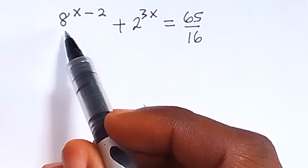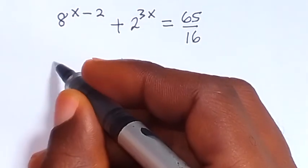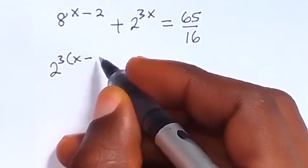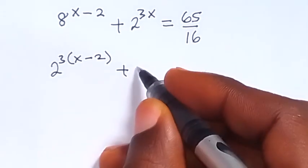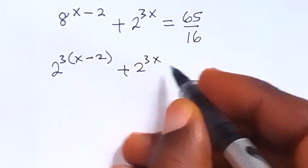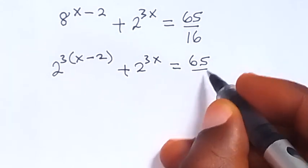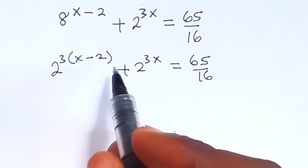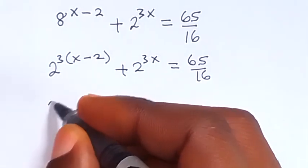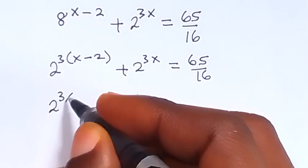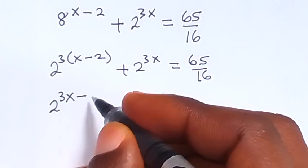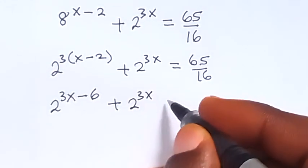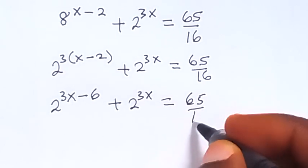Here, let's change this 8 to base 2 as well. So we have 2 raised to power 3, then multiply by x minus 2, plus 2 raised to power 3x, equals to 65 over 16. Then we use the power to open this bracket, and this will become 2 raised to power 3x minus 6, plus 2 raised to power 3x, equals to 65 over 16.